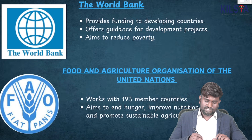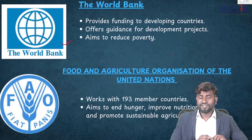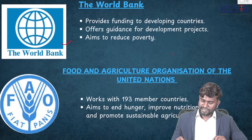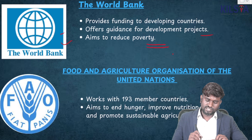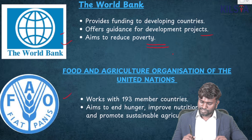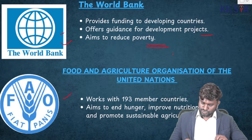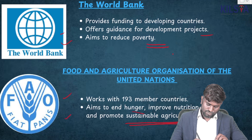This is the image of the World Bank. It provides funding to developing countries, offers guidance for development projects, and aims to reduce poverty. And this is the Food and Agriculture Organization of the United Nations, which aims to end hunger, improve nutrition, and promote sustainable agriculture.